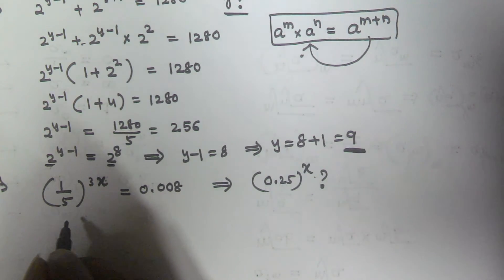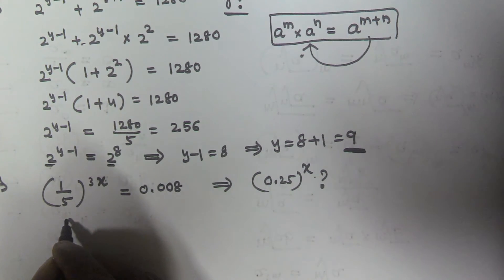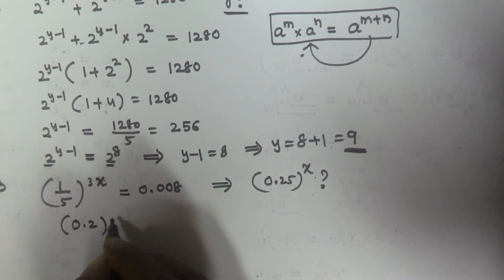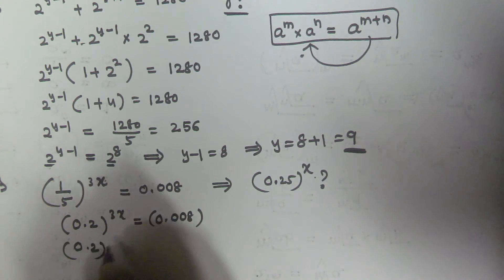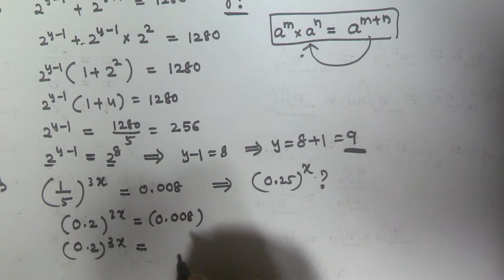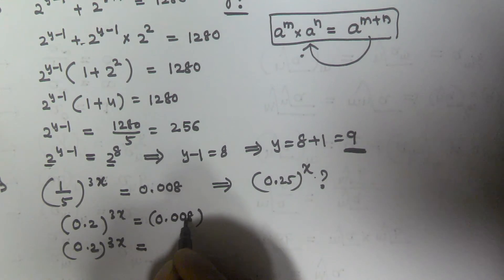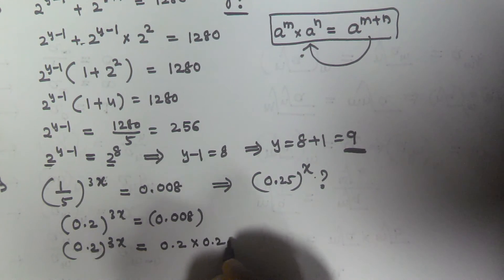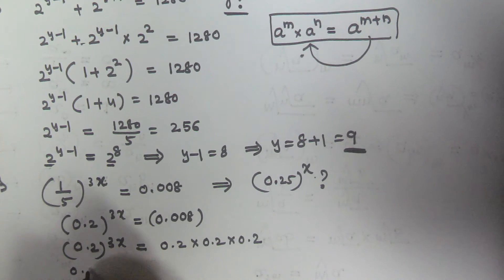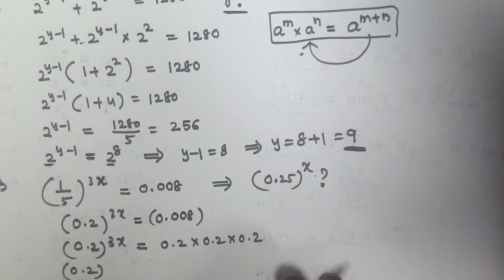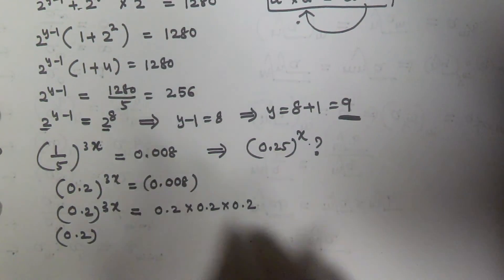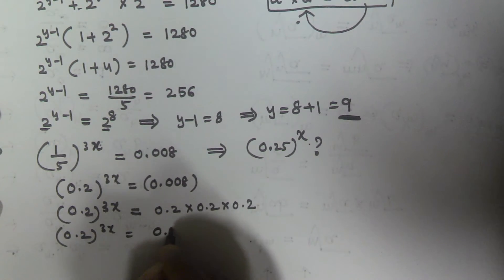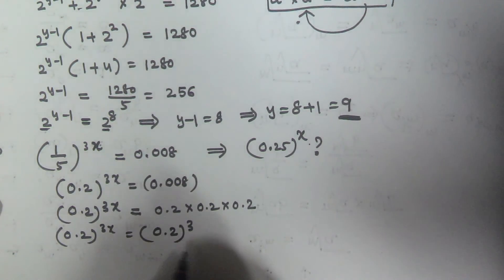Now 0.008 can also be written as 0.2 times 0.2 times 0.2, which is 0.2^3. So (1/5)^(3x) equals 0.2^3. Since 1/5 equals 0.2, we can write 0.2^(3x) equals 0.2^3.